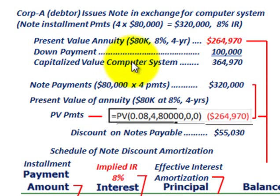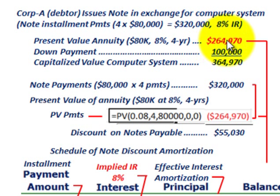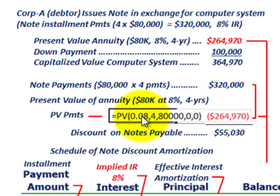Before amortizing, let's determine the capitalized value of the computer system. We take the present value of the payments — $264,970 — plus the down payment of $100,000, giving a capitalized value of $364,970. That's what we capitalize on our balance sheet for the computer system. We had to discount those annuity payments back using the implied interest rate embedded in this zero interest bearing note.